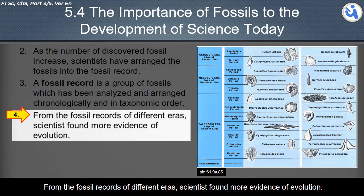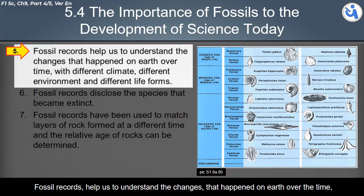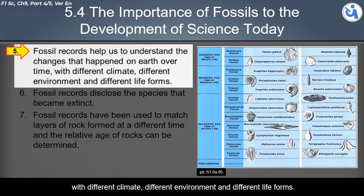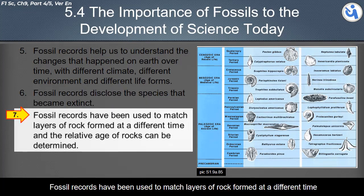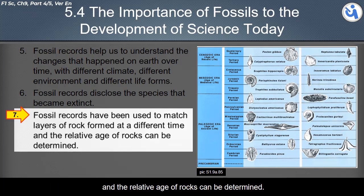From the fossil records of different eras, scientists have found more evidence of evolution. Fossil records help us understand the changes that happened on earth over time, with different climates, different environments, and different life forms. Fossil records also disclose the species that became extinct, and have been used to match layers of rock at different times so that the relative age of rocks can be determined.